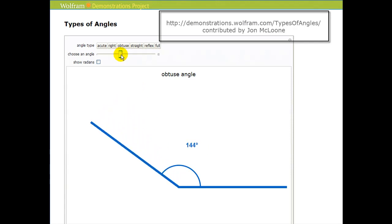And then again, as soon as we reach 180 degrees, that angle has a special name. It's called a straight angle because it forms a straight line.